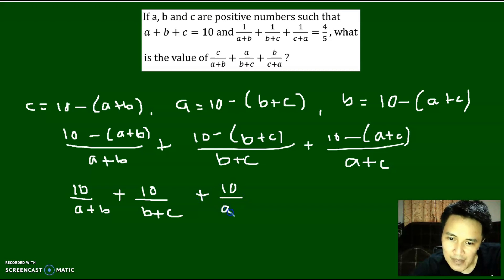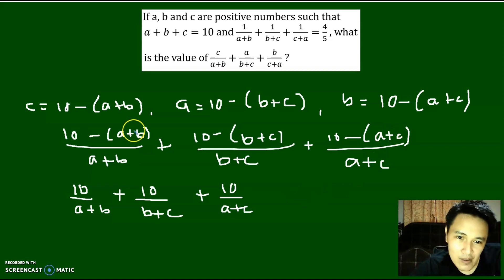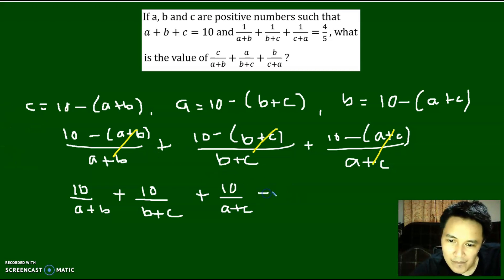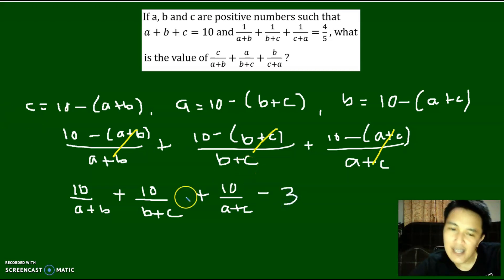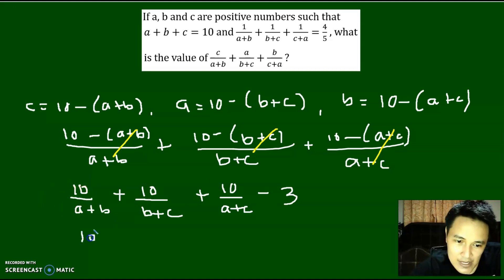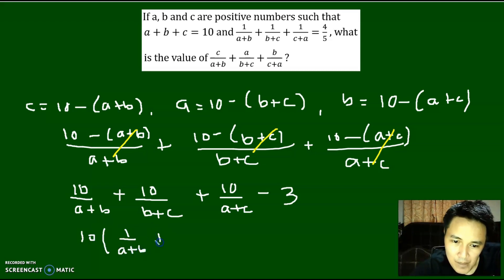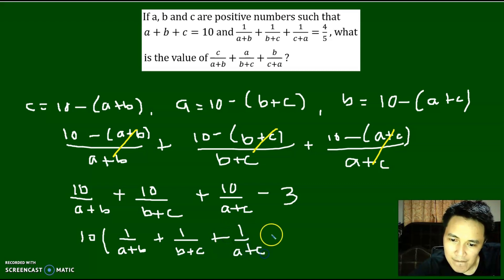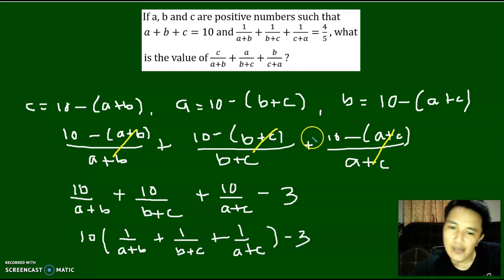Plus, 10 over A plus C, minus A plus C over A plus C. So therefore we have three 1s being subtracted, which means we subtract 3. Now, notice that on these three remaining terms, I can simply factor out 10. That will give me 10 times 1 over A plus B, plus 1 over B plus C, plus 1 over A plus C, minus 3.